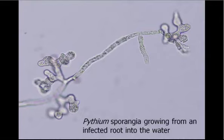These are sporangia of Pythium in water — the lobed-looking structures here. This is Pythium aphanidermatum. Pythium has various types of sporangia, and we will see a video later of how zoospores are produced in a vesicle that forms outside of the sporangium, and we can see one with Phytophthora as well.